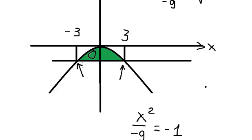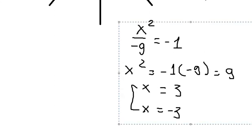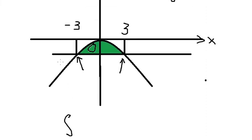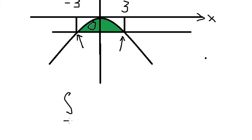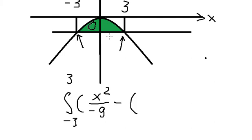Now if we look at the graph, we can see the curve is above the line. So we will set up the integral from negative three to positive three. The upper function is the curve, x squared over negative nine, minus the lower function, which is the line, negative one.